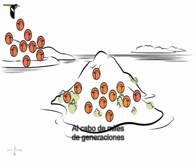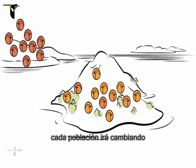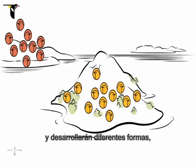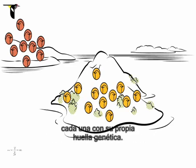Over thousands of generations, the two populations will be shaped by natural and sexual selection into separate forms, each with a unique genetic fingerprint.